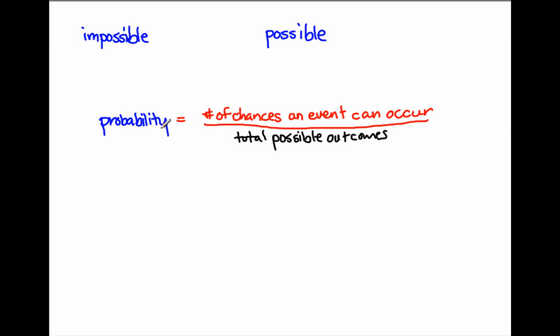So probability is the number of chances an event can occur all over the total possible outcomes. So probability will always be a fraction. You can express it as a fraction, and we know that percents are fractions as well, so you can also express it as a percent. So you have another way of thinking about it. You might also see this. This symbol right here means the probability of whatever happens inside here. So the probability of red might be P of red. That's another alternate way of seeing it.